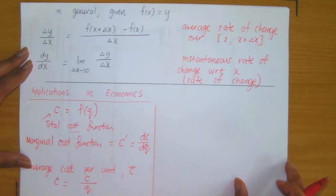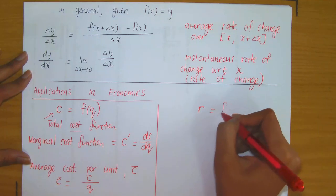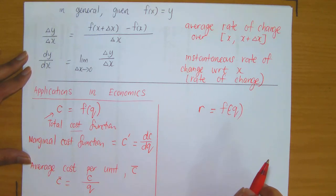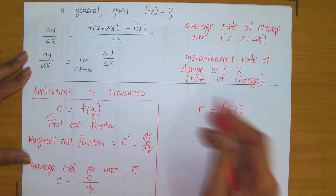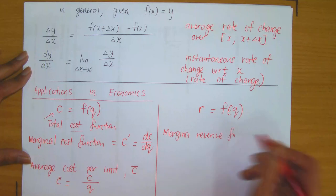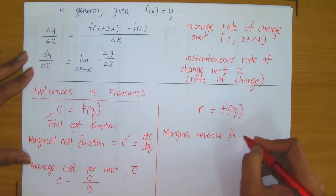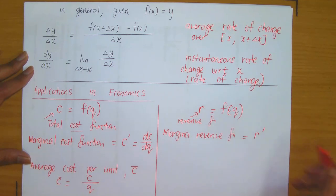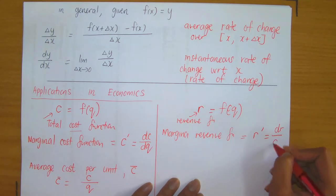We also have a similar section pertaining to revenue. Suppose we're given a total revenue function R of Q, which depends on the quantity sold. The rate of change of the total amount of monies received based on sales with respect to the total number of units sold is called the marginal revenue function. Since it is the rate of change of total revenue with respect to quantity sold, this equals R prime — the derivative of the revenue function — which amounts to taking the derivative of R with respect to Q.